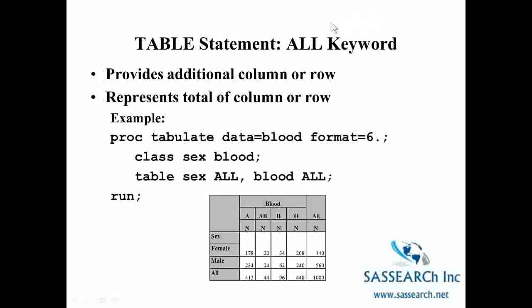Another very helpful keyword for PROC TABULATE is the ALL keyword. It provides an additional column or row depending where you put the ALL keyword. And basically what the ALL keyword is telling SAS is to produce a totals column or a totals row. So in this procedure we're using the ALL statement to get a column summarizing the gender totals and a row summarizing the blood type totals.